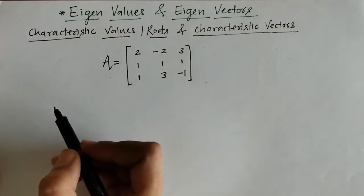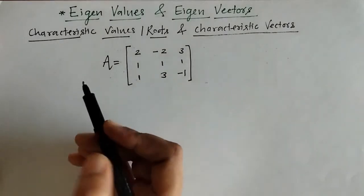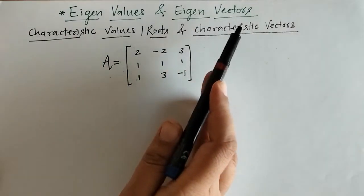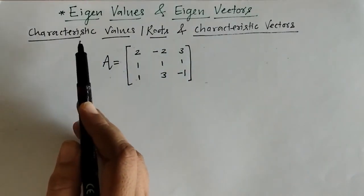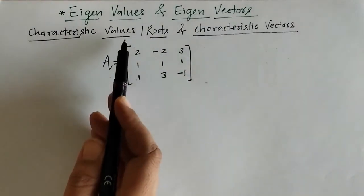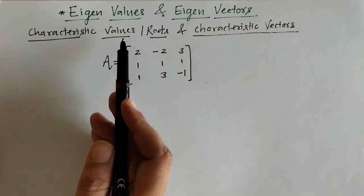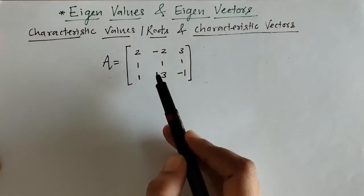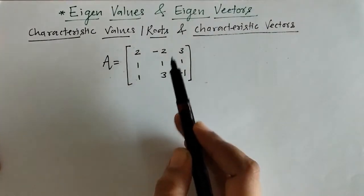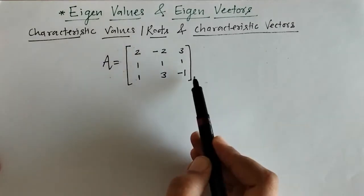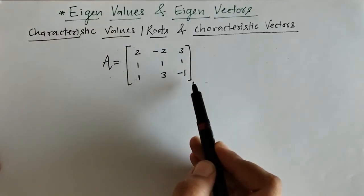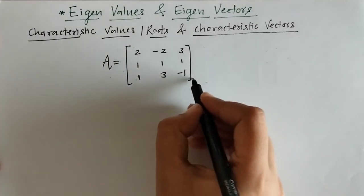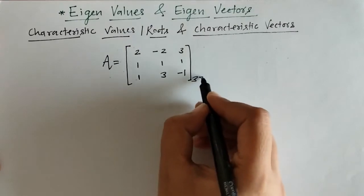Hello everyone, today we are going to see eigenvalues and eigenvectors, also known as characteristic values and characteristic vectors. These values can only be found for a square matrix, so here we have taken a matrix of order 3.